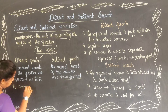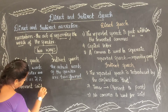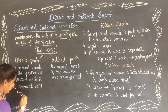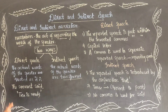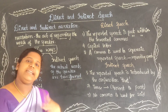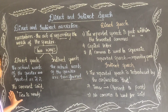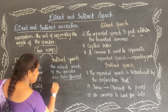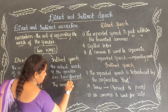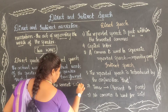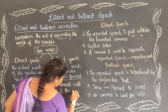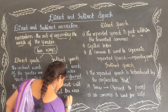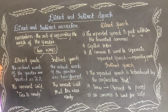For example: 'The servant said, "Tea is ready."' — that is direct speech. And 'The servant said that tea was ready.' — that is indirect speech.